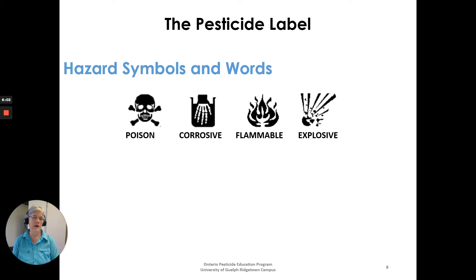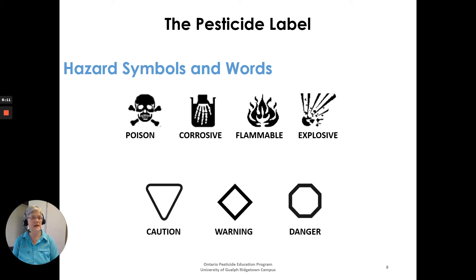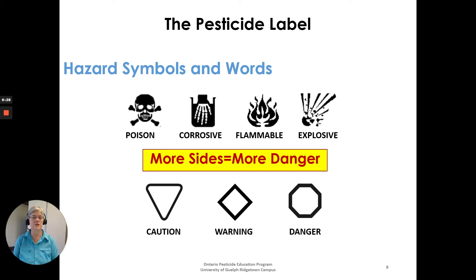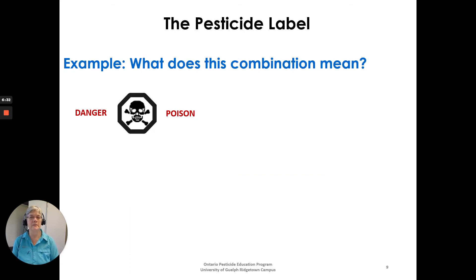There are four hazard symbols that can appear on a pesticide label: poison, corrosive, flammable, and explosive. They appear in three degrees of severity — caution has three sides (lowest hazard), warning has four sides (moderate hazard), and danger has the most sides (highest hazard). So more sides equals more danger.